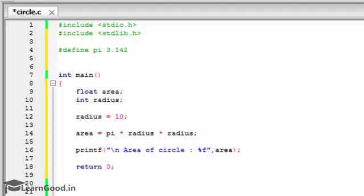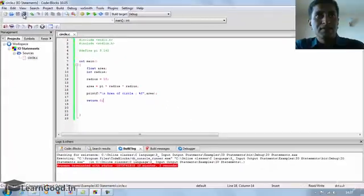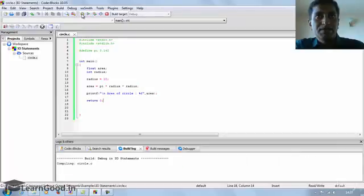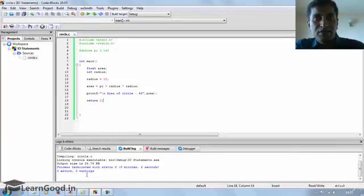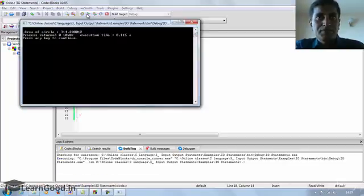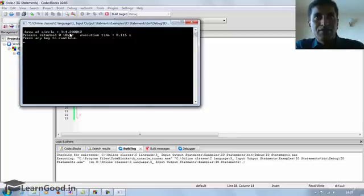Let's save this and rebuild it. So when we build it there's no error, 0 errors 0 warnings, so you can run the code now. Output as area of circle as 314.20012 as a result.